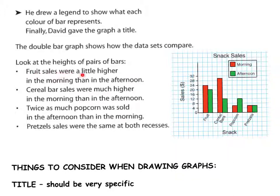Well, we could say that the fruit sales are a little higher in the morning than in the afternoon. How much higher? It looks like about $4 more. Cereal bars are much higher in the morning than in the afternoon. Oh, wow. It looks like four, six, eight, ten, plus two more. About $12 more in cereal bars in the morning than in the afternoon. Popcorn sales twice as much in the afternoon as in the morning. Quite a bit more. And pretzel sales were the same at both recesses at $6, so same amount. So again, doing some excellent concluding based on our graph that we've drawn.